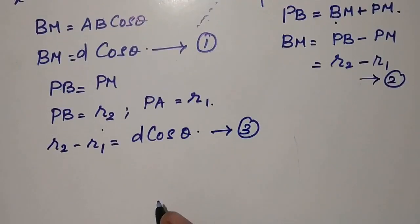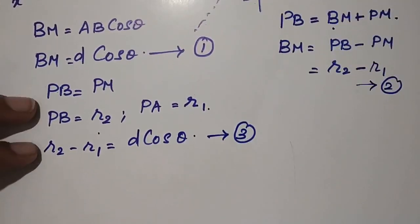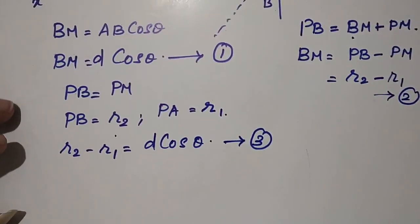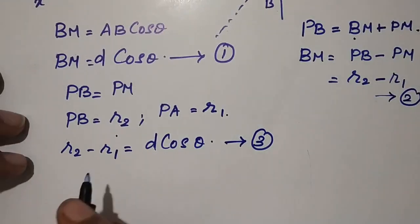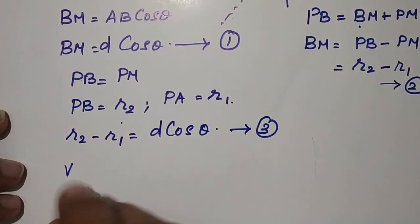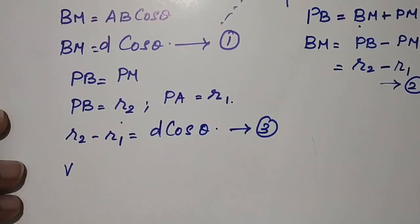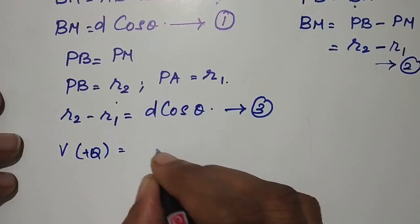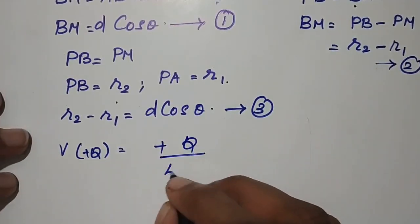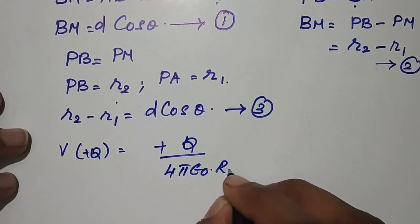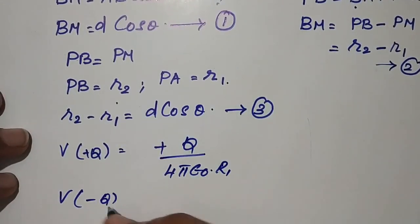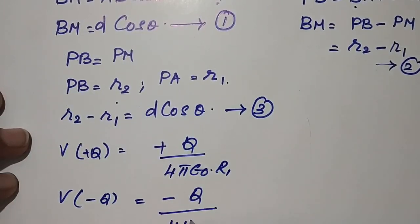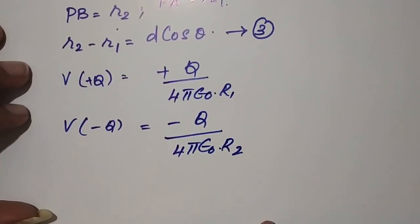To find the electric field and potential at point P, we consider individual charges — as we have seen, potential is due to single charges considering the other charges to be at infinite distance. So what will be V due to positive +q, and what will be V due to negative -q?